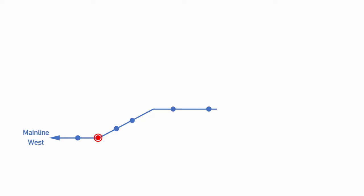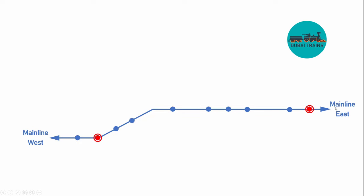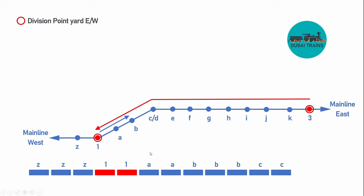Let me first start by explaining the different types of yards that exist and why they're there. Here in blue you see a railroad — the blue railroad — and there are several dots along the line representing villages, cities, towns, and industries. The two red dots are division point yards. Here we have a train coming in from the right, following the red line going to point one, with cars that have destinations further up the line.